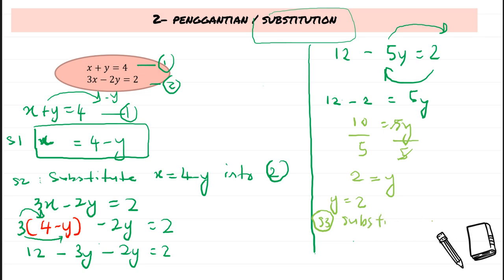In step three, we substitute y equals 2 into the easier equation, which is x equals 4 minus y. So x equals 4 minus 2, giving x equals 2. Using the substitution method, we get x equals 2 and y equals 2.